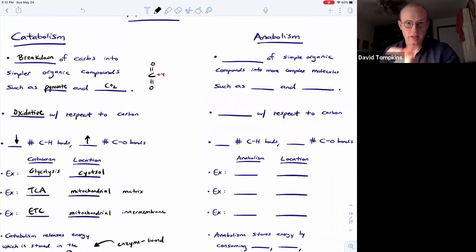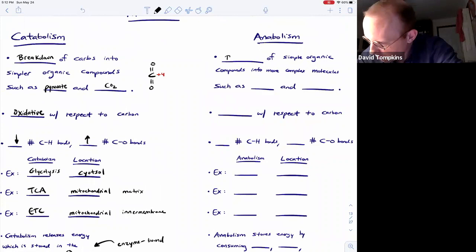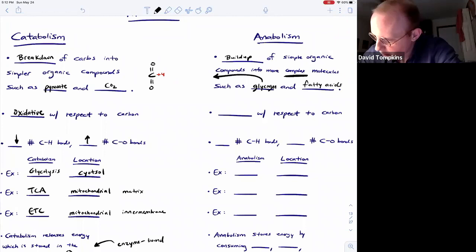So let's juxtapose catabolism with anabolism. Anabolism is now the buildup or the putting together of simpler organic molecules to form more complex molecules such as polymers like glycogen or highly reduced species like fatty acids. Glycogen we will see later is going to be a polymer that stores glucose when glucose levels are high. And fatty acids, these long hydrophobic carbon chains that have a polar carboxyl end, they are highly reduced as each of these methylene units has two C-H bonds.